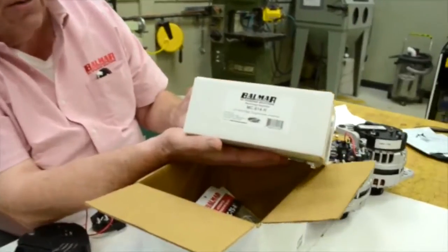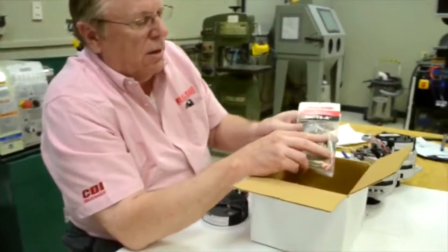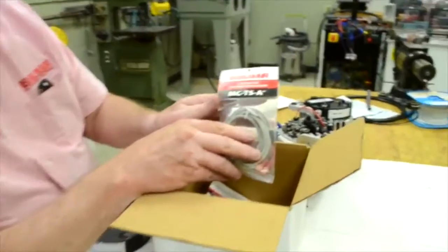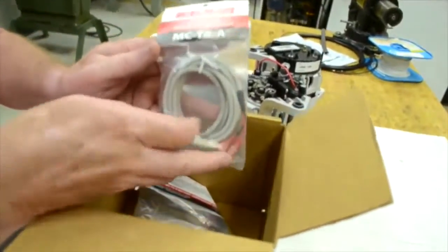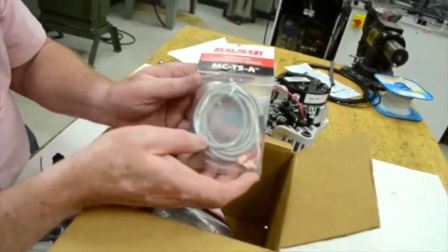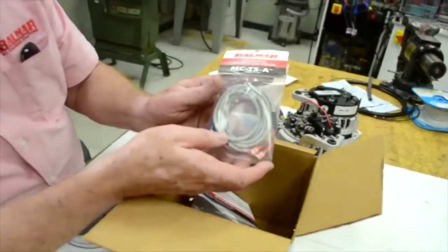This kit also includes the MC614-H regulator. That is the regulator with harness. It also includes the alternator temperature sensor, the MC-TS-A. This will go on the Vallejo alternator. There is a screw provided for its installation.